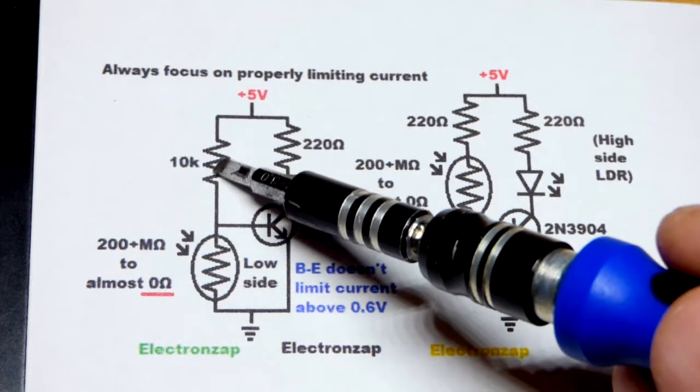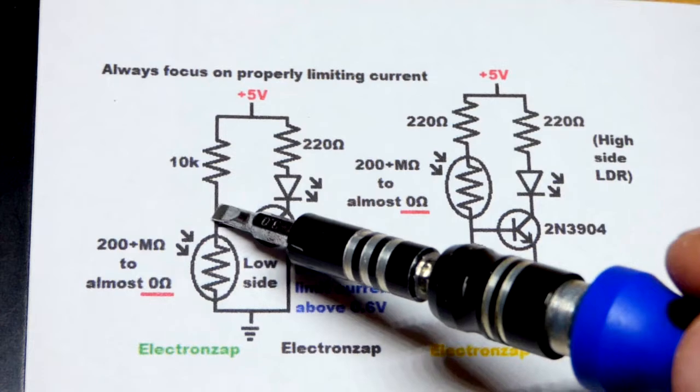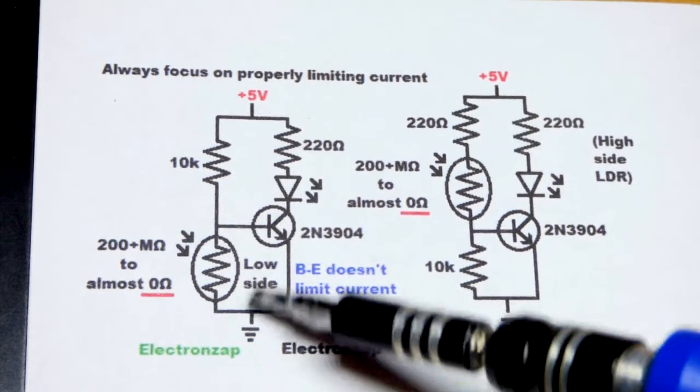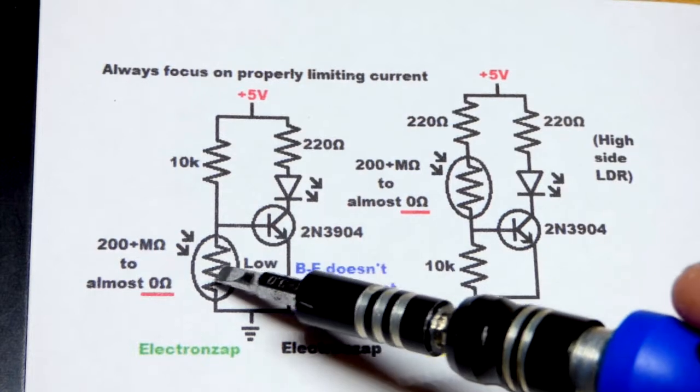Over here, we have a 10 kilo-ohm resistor. That path, 10 kilo-ohms, protecting the base to emitter and also protecting the light-dependent resistor. Pretty straightforward. We've got plenty of protection there. We don't have to worry about anything.